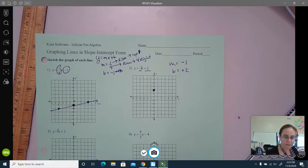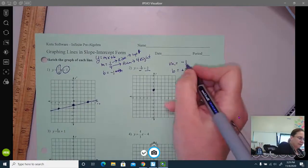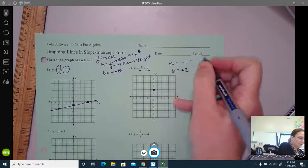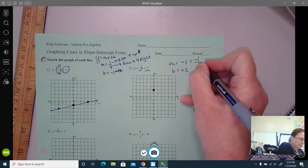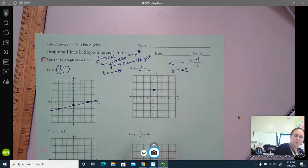Anytime you have a whole number, that is equivalent as a fraction to the whole number over one. Because any number divided by one is just itself.